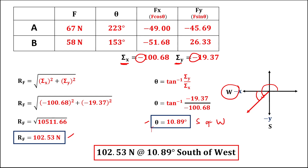The final answer is 102.53 newtons at 10.89 degrees south of west. Take note that if the angle is negative, then that's clockwise. This is the resultant force for the sum of these two vectors.